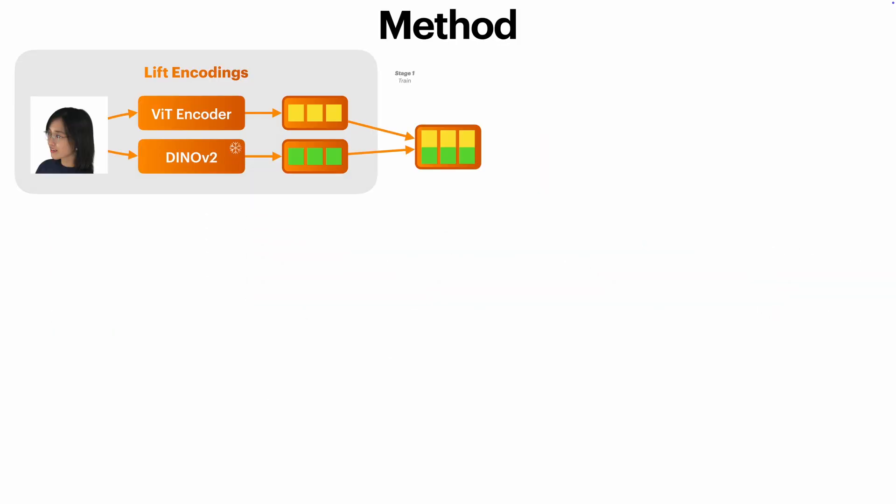We start with 3D reconstruction. We use a dual-branch 2D encoder. One branch uses a frozen DINOv2 backbone to extract rich, semantically meaningful features. The second branch consists of a lightweight vision transformer that learns task-specific encodings.